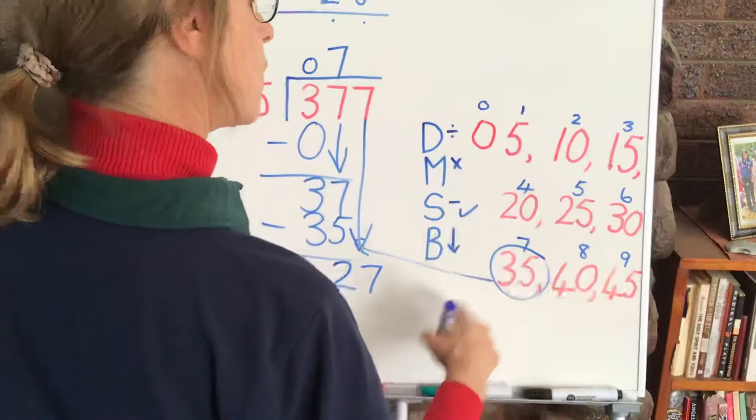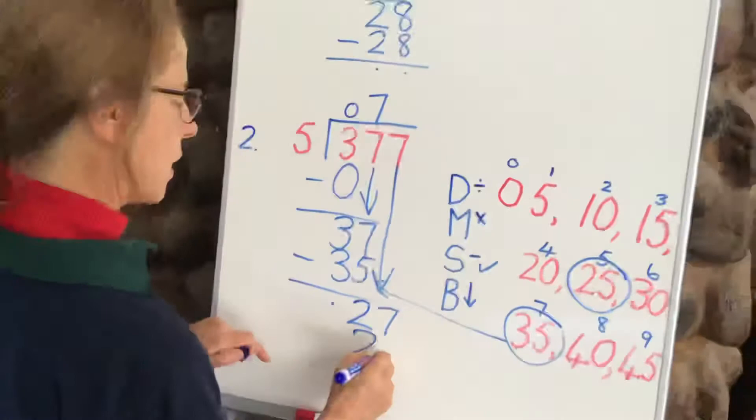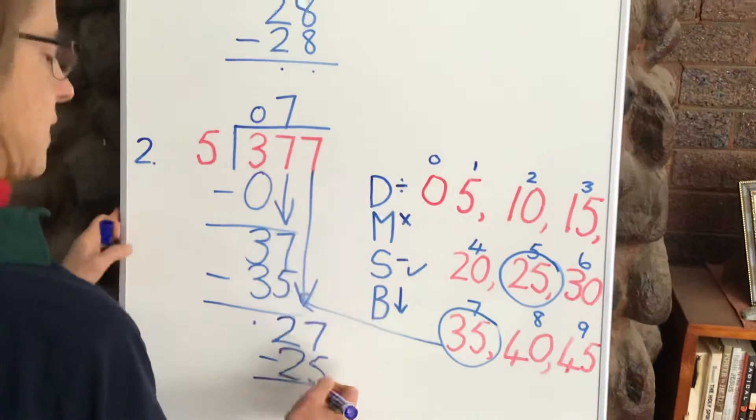And then bring down our second number. We've got now a 27 that we're looking for. 25, we'll have to take 25. It cannot be bigger than this. There we go. And 7 minus 5 is 2. And that's our remainder.